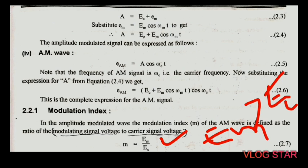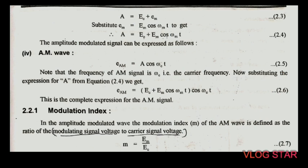Regarding the conditions of modulation index: if E_m is greater than E_c, over-distortion occurs. If E_m is less than E_c, the modulation index value will be between 0 and 1.